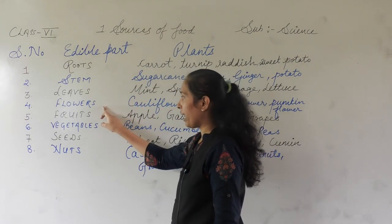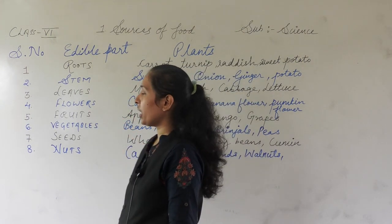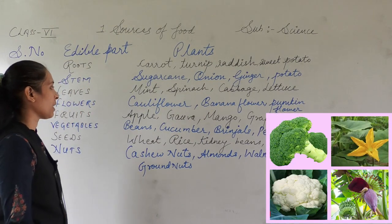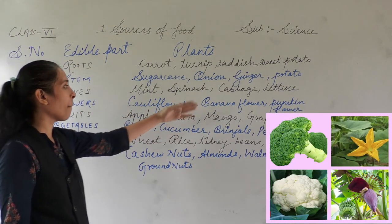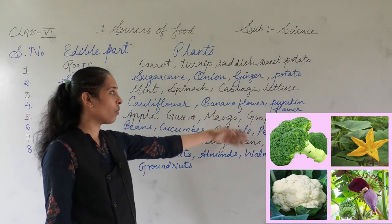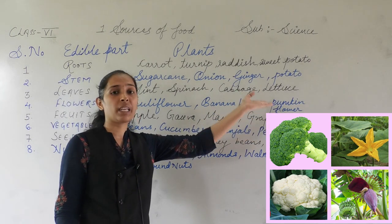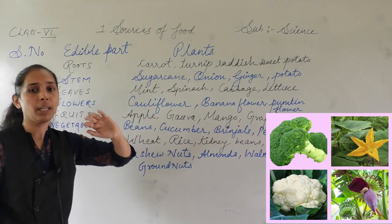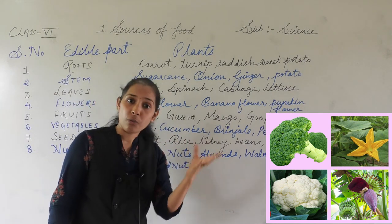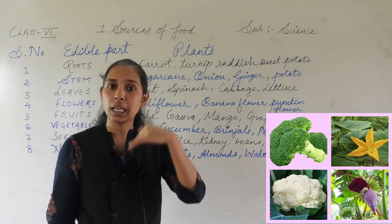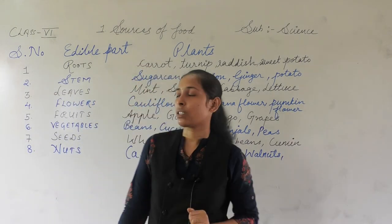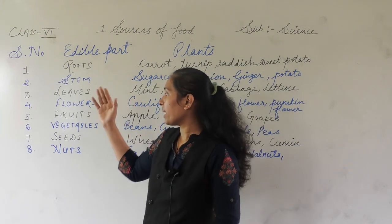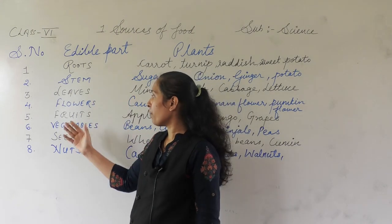Next are edible flowers. The edible flowers are cauliflower, banana flower, pumpkin flower, and broccoli is also an example of edible flowers. These are the flowers that we eat, and that's why they are called edible flowers.